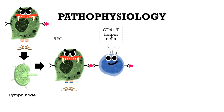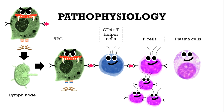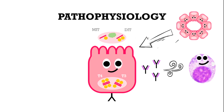T-helper cells stimulate B cells to start proliferating, and to differentiate into plasma cells, which produce auto-antibodies against auto-antigens. The auto-antibodies, including plasma and T-helper cells, enter the circulation and reach the thyroid gland. There are different targets of the auto-antibodies.